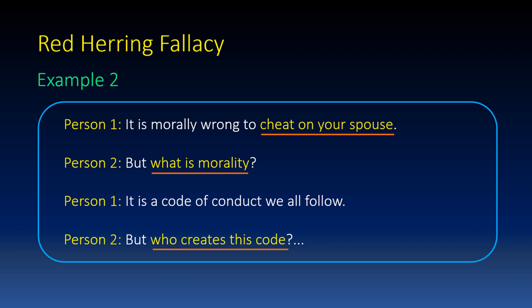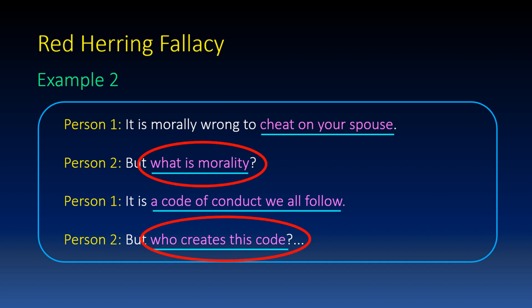When Person 1 said, 'It is morally wrong to cheat on your spouse,' Person 2 intelligently diverted the discussion by raising a question: 'What is morality?' Then Person 1 explained that morality is a code of conduct we all follow. Then Person 2 continued by raising another question, 'Who creates this code?' So all these questions — 'What is morality?' and 'Who creates this code?' — are red herrings, because Person 2 raised them to divert the discussion from its original subject: cheating on your spouse. The original subject is completely lost.